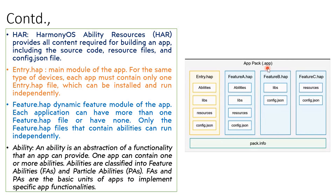The next thing is feature.hap, which is very important. Each application can have more than one feature.hap file — as you can see, we have feature A.hap, feature B.hap, feature C.hap, and so on. We can have more than one feature.hap file. Only the feature.hap files that contain abilities can run independently — please remember this point.